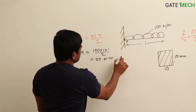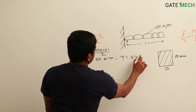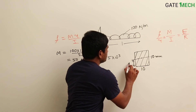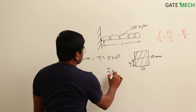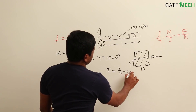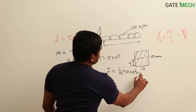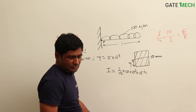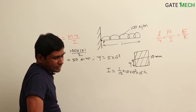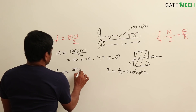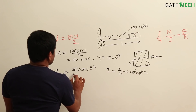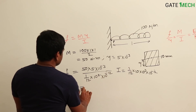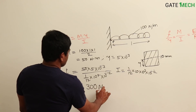y = 5 × 10⁻³ m, since it is the distance from the neutral axis to the lower fiber. I = (1/12) × 10 × 10³ converted to meters = (1/12) × 10⁴ × 10⁻¹². Substituting: f = 50 × 5 × 10⁻³ / [(1/12) × 10⁴ × 10⁻¹²]. Simplifying gives 300 megapascal.